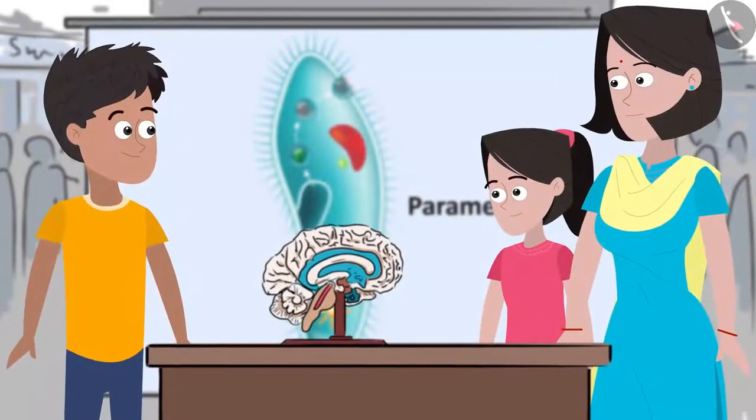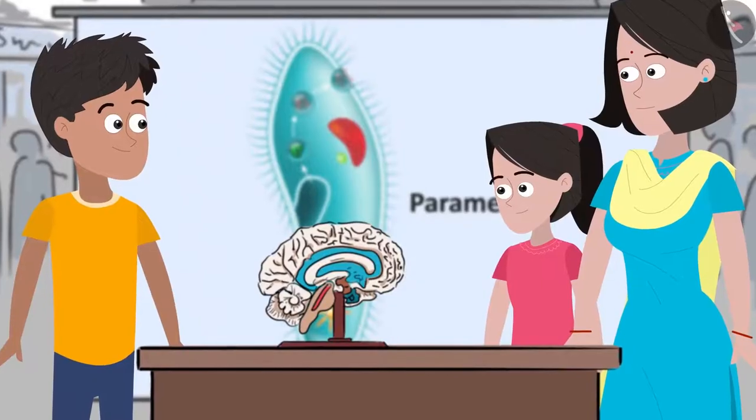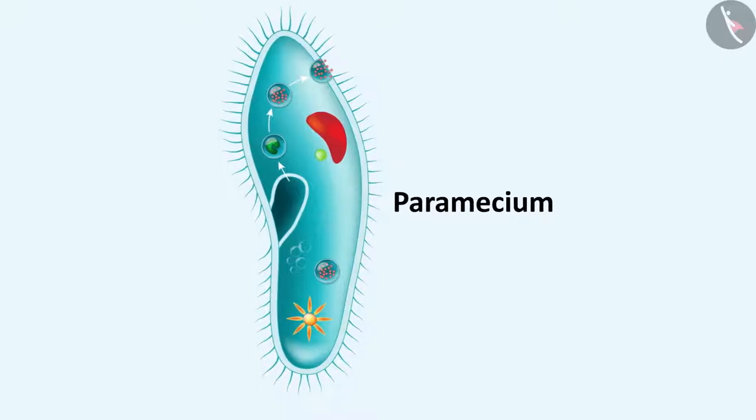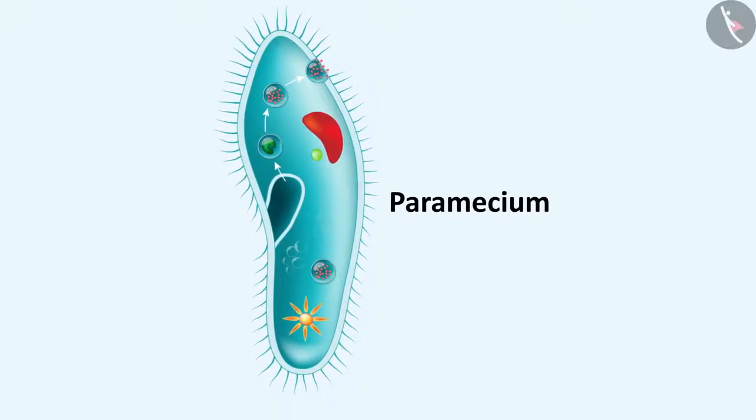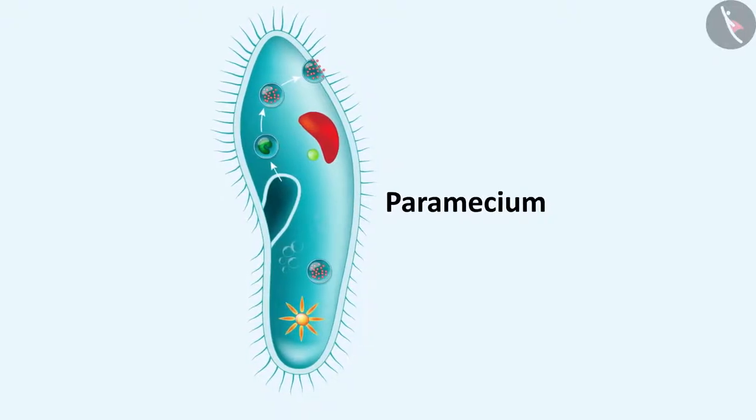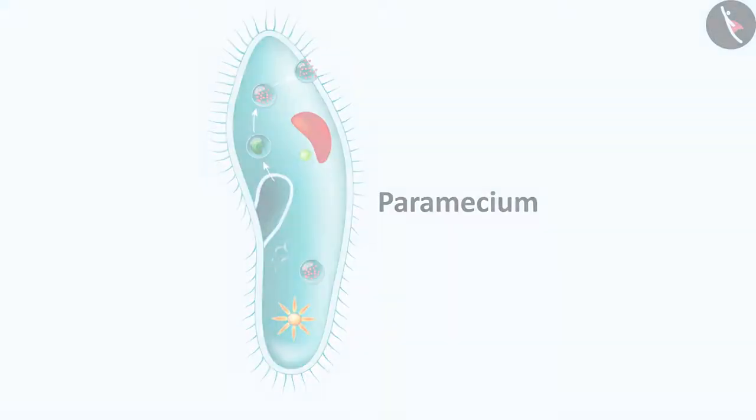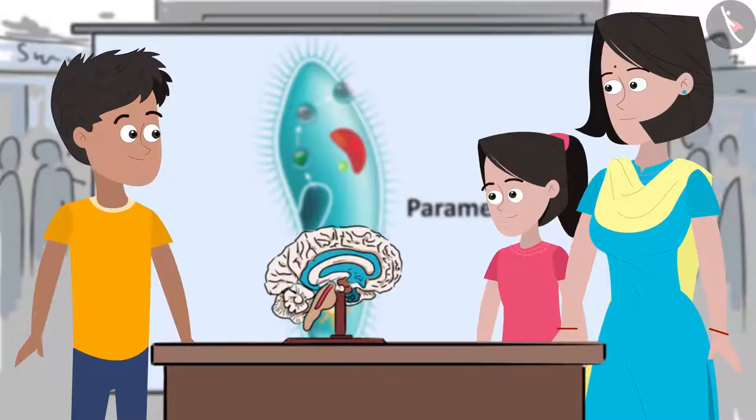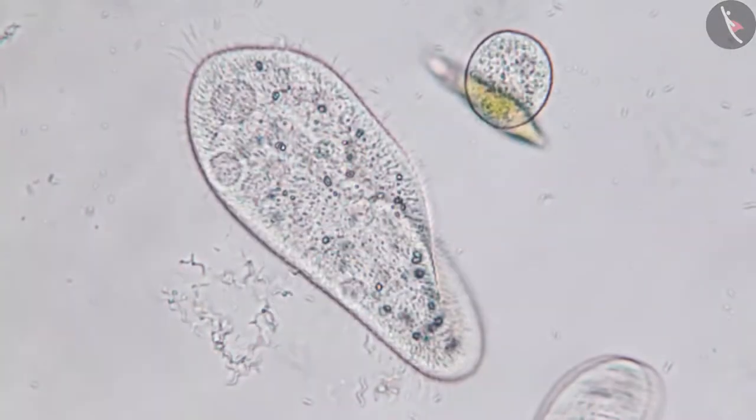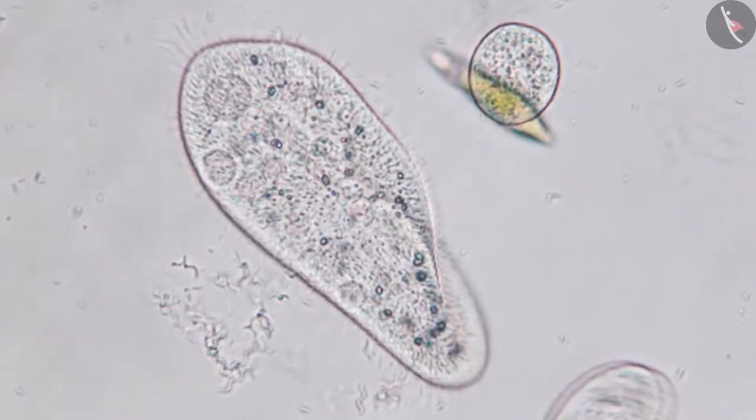On one of the posters at Kabir's stall, Sanya observed a shoe-like structure labeled as Paramecium. Look, bhaiya, this organism looks like a shoe. Yes, this is Paramecium, a unicellular organism.